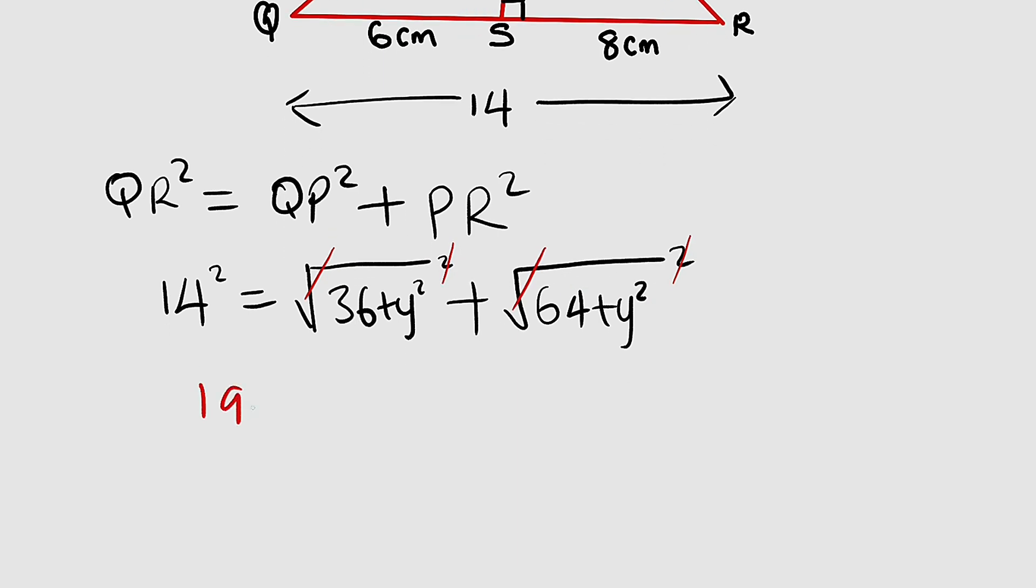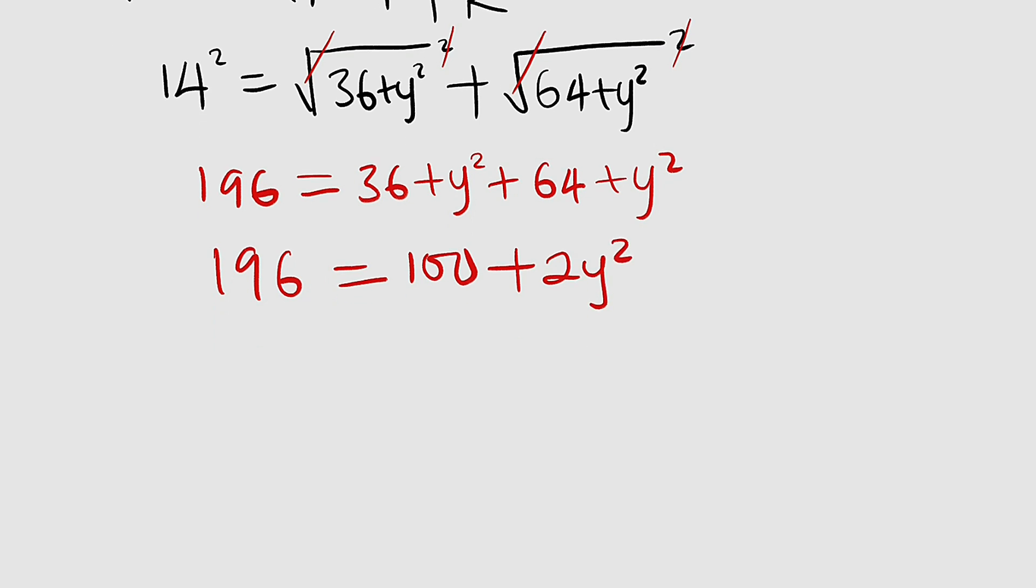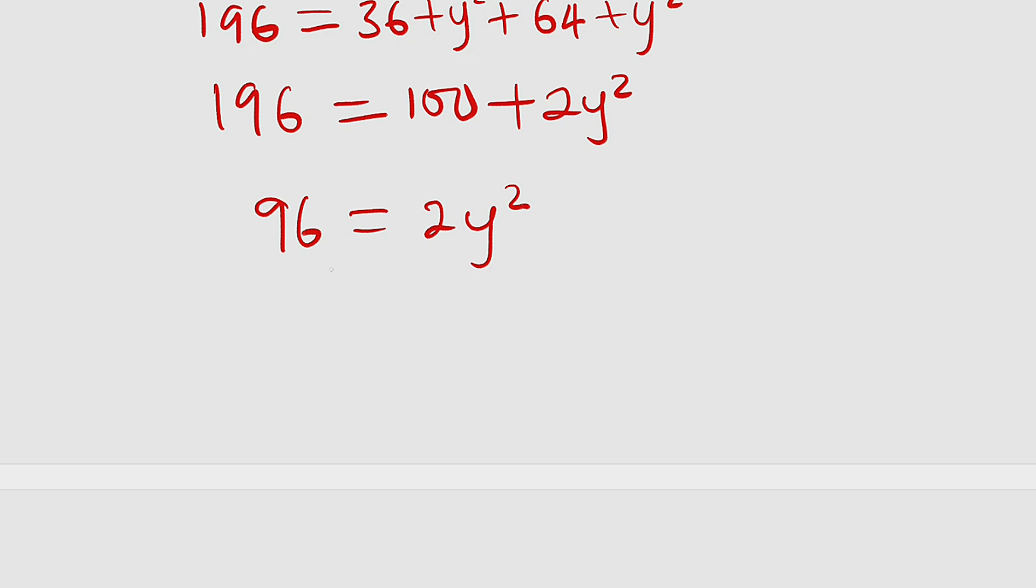From here, power of 2 will cancel the square roots. What we have is 14 squared to the left, which is 196. This is equal to 36 plus y squared plus 64 plus y squared. 196 to the left is equal to 100 plus 2y squared. Subtract 100 from both sides, you have 96 equal to 2y squared. Divide both sides by 2, you can see that y squared will be equal to 48.